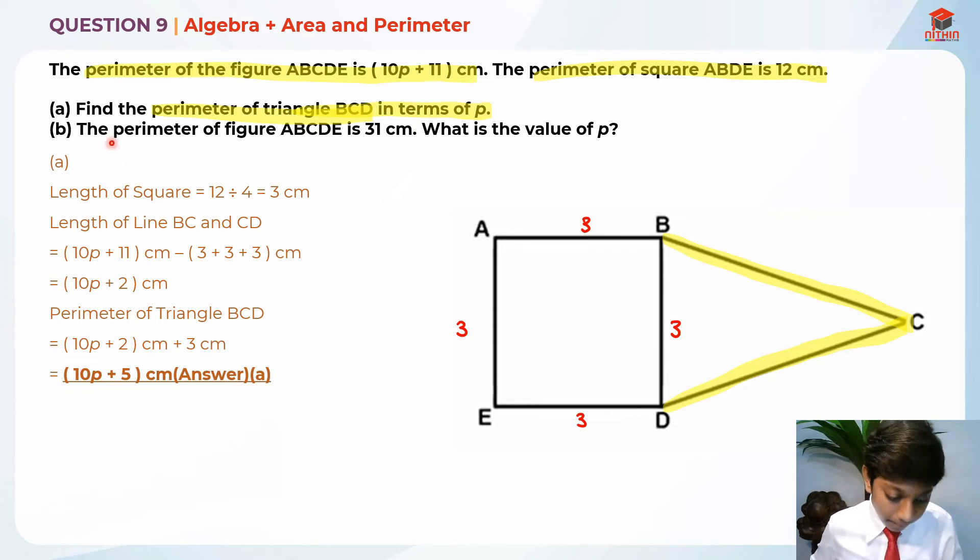Now let's read part B. The perimeter of the figure ABCDE is 31cm. What is the value of p? Let's highlight it. So the perimeter of the figure ABCDE is 31. I thought they already gave us the perimeter of figure ABCDE, which is 10p plus 11. Now we can form an equation. So it's 10p plus 11 is equal to 31cm.